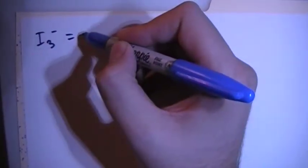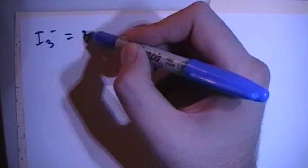Hey guys, in this video I'm going to show you how to draw the Lewis dot structure for the triiodide ion. We've got I3 minus, that's going to give us a total of three iodines, each with seven valence electrons.